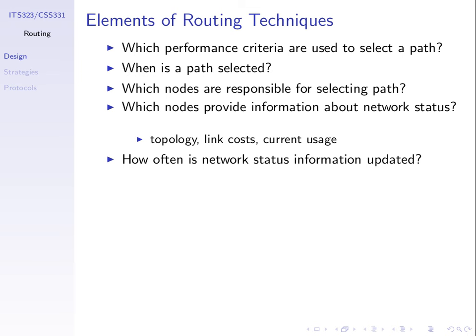We've introduced routing and said there are a number of challenges with it - like what performance metrics or criteria do we use to select the best path? Do we use financial cost, delay, throughput, or some other criteria? When is a path selected? Do we choose a path now for this packet and then for the next packet choose another path, or do we choose one today and use it for the next 24 hours?